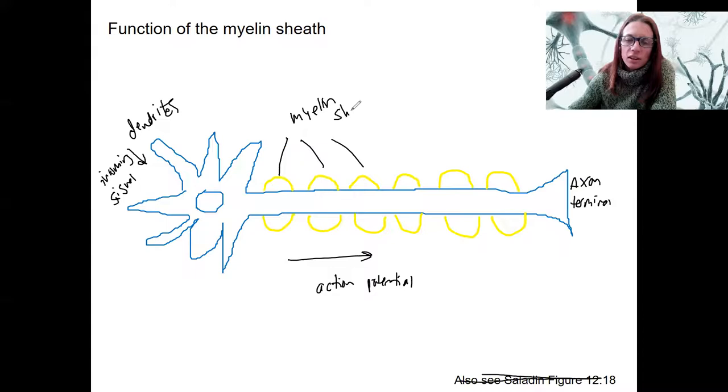Composed of either oligodendrocytes or Schwann cells. And what our electrical signal is going to do is jump from one of these nodes to another.